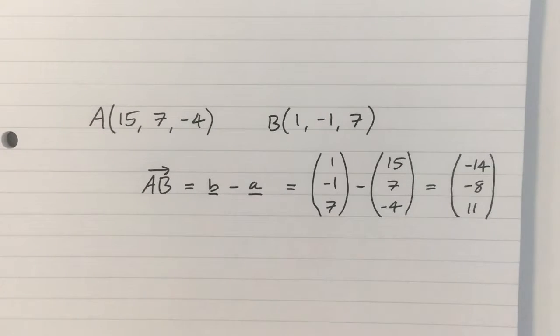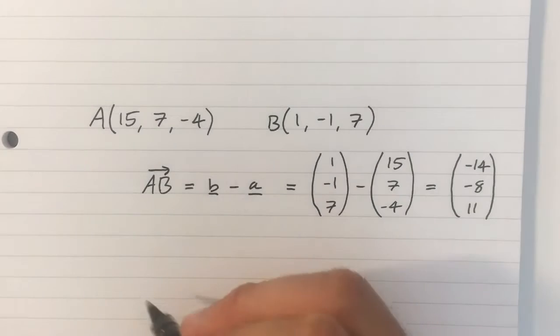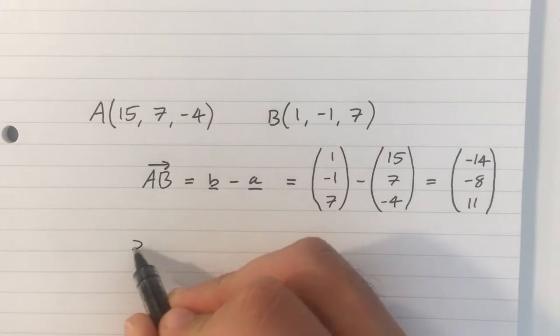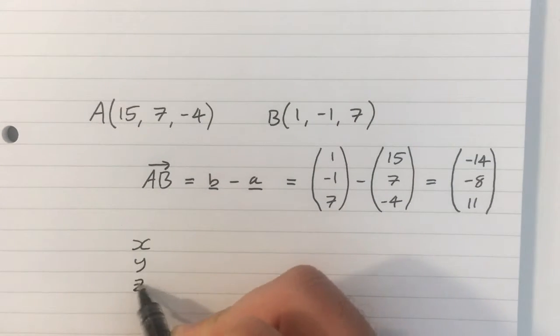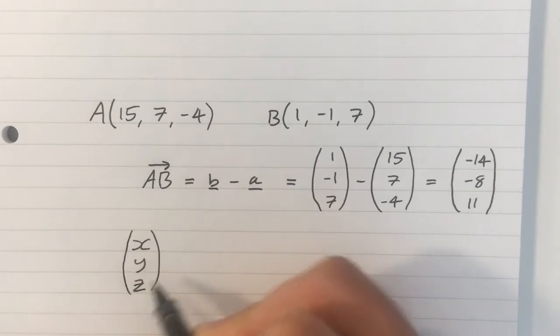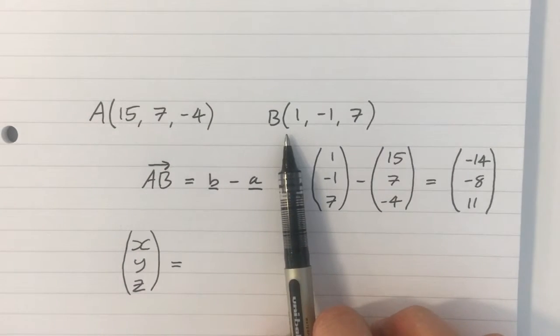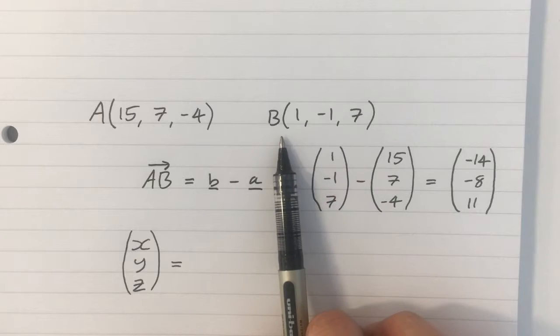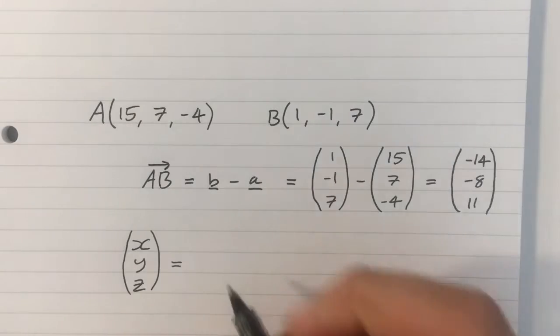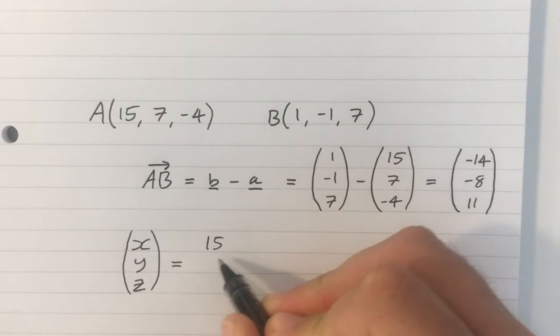So, that is a vector in the direction of the line. And then, finally, I can just write my answer now. X, Y, and Z is equal to a point on the line. So, I could choose A or B here. It doesn't matter. Or I could choose any other point on the line. You can work them out. It's easier to choose A or B, then. So, 15, 7, minus 4.